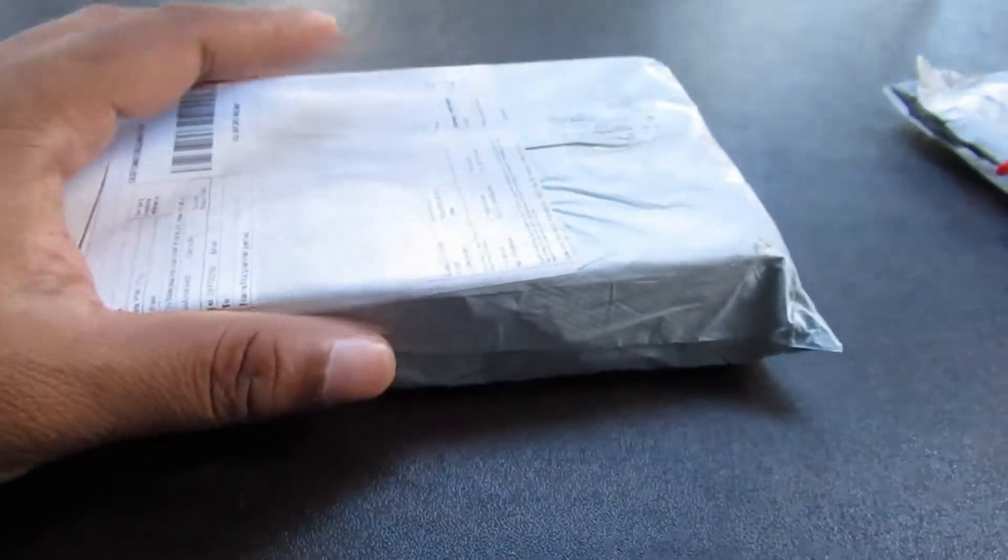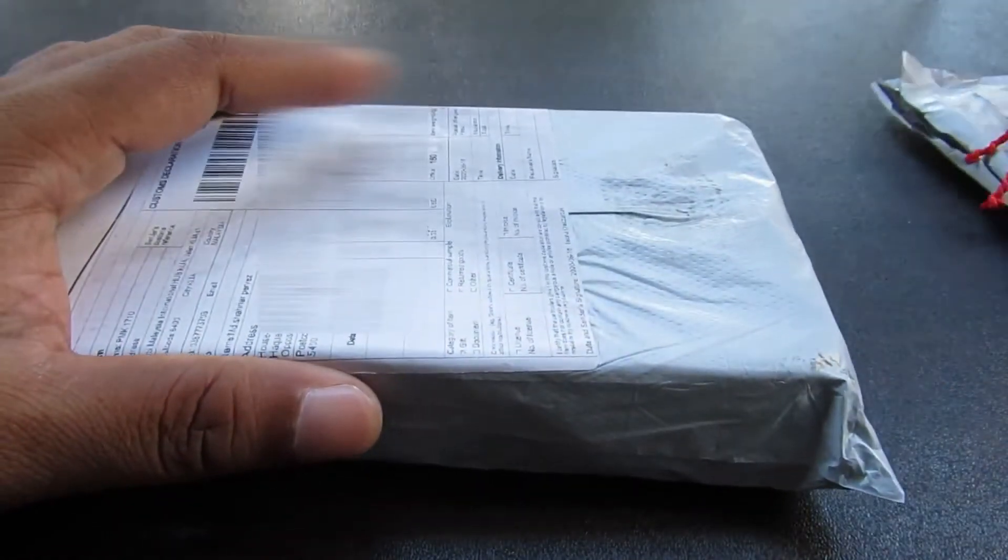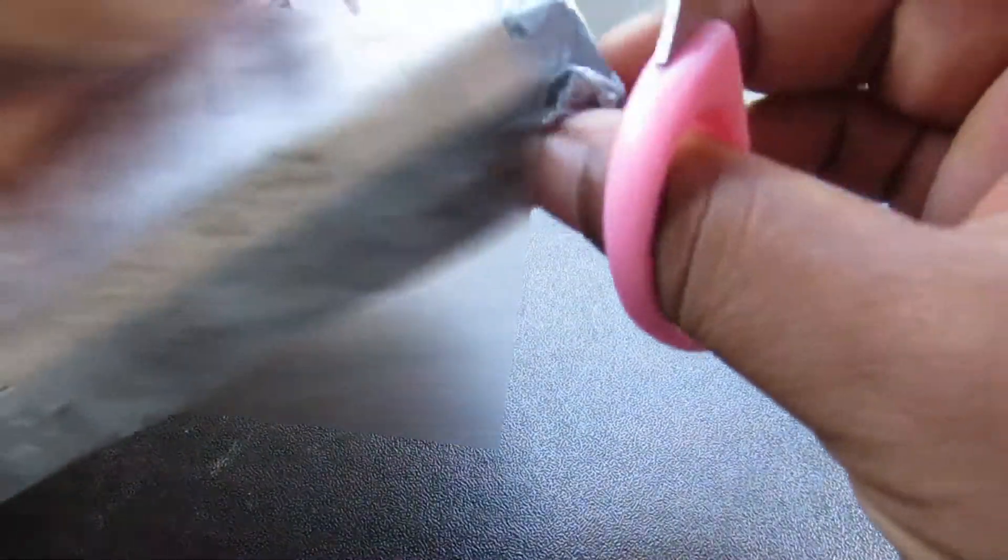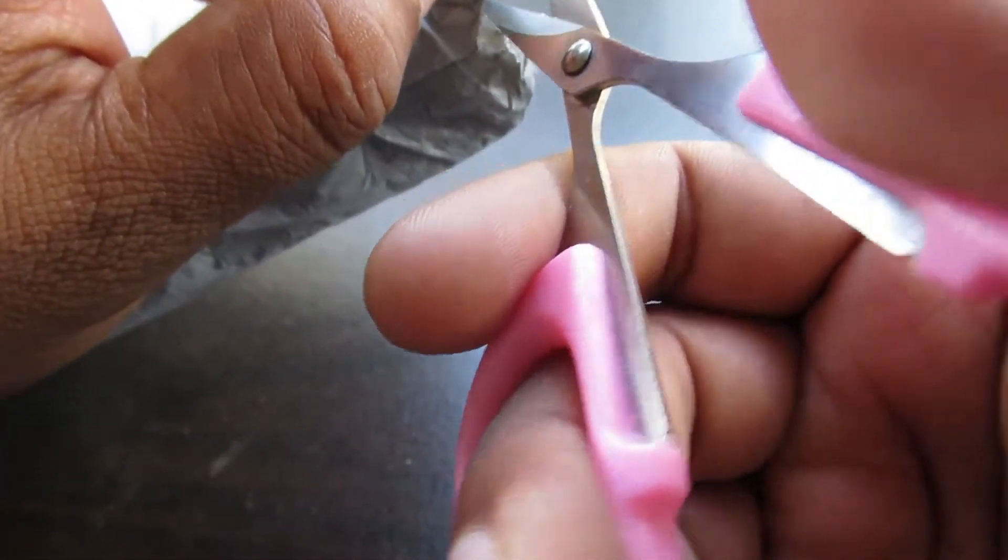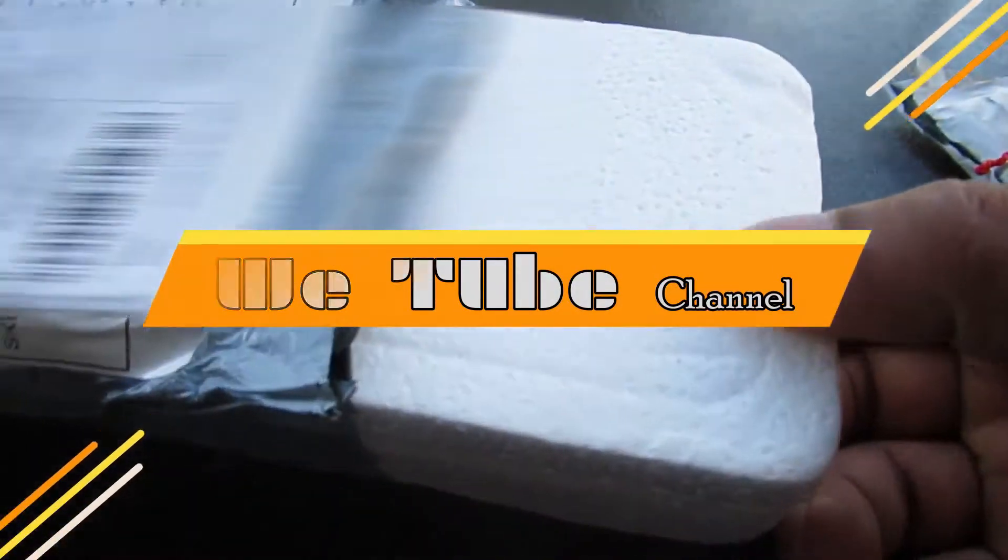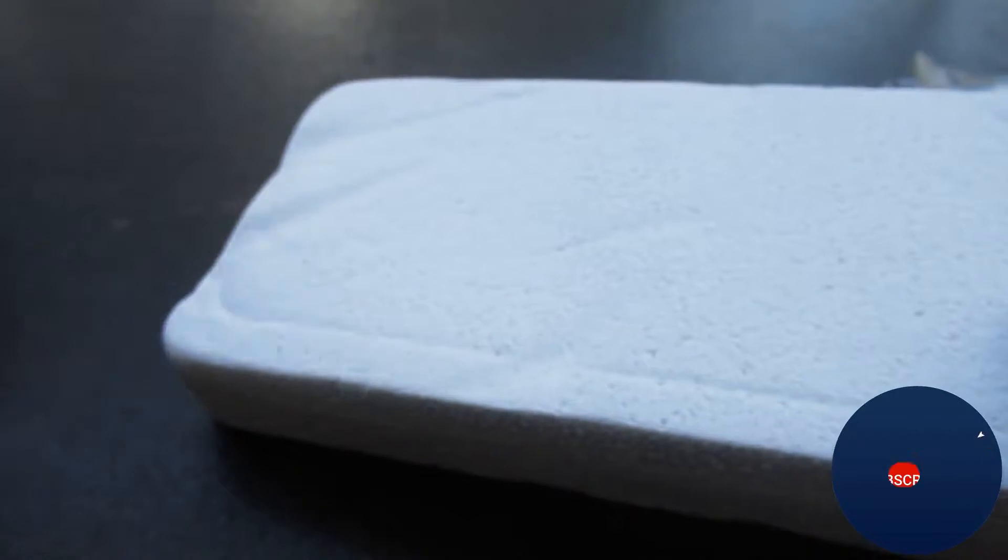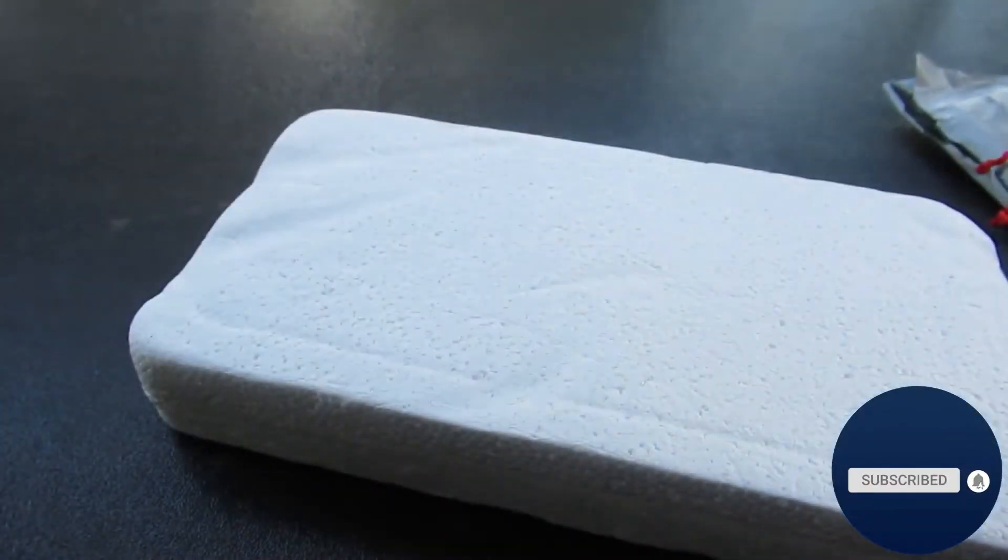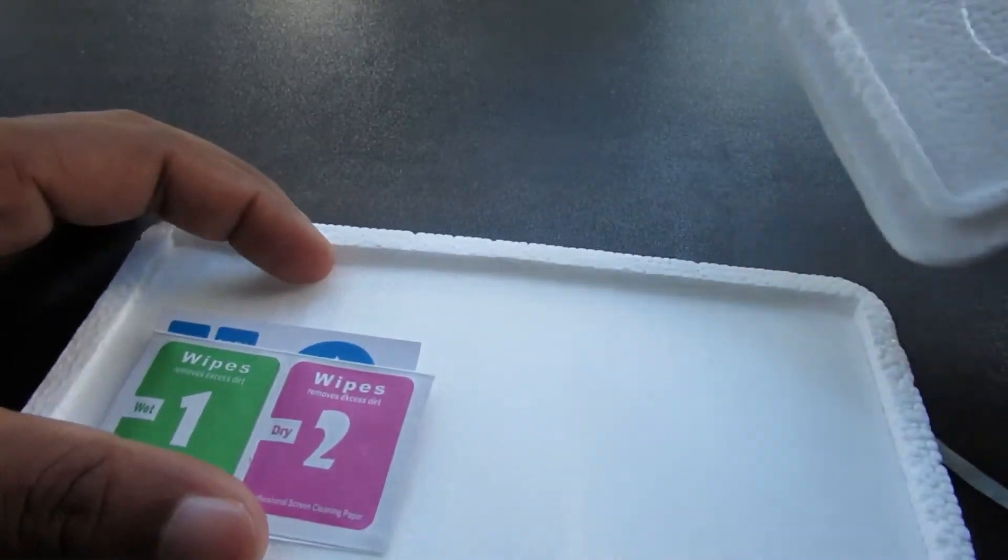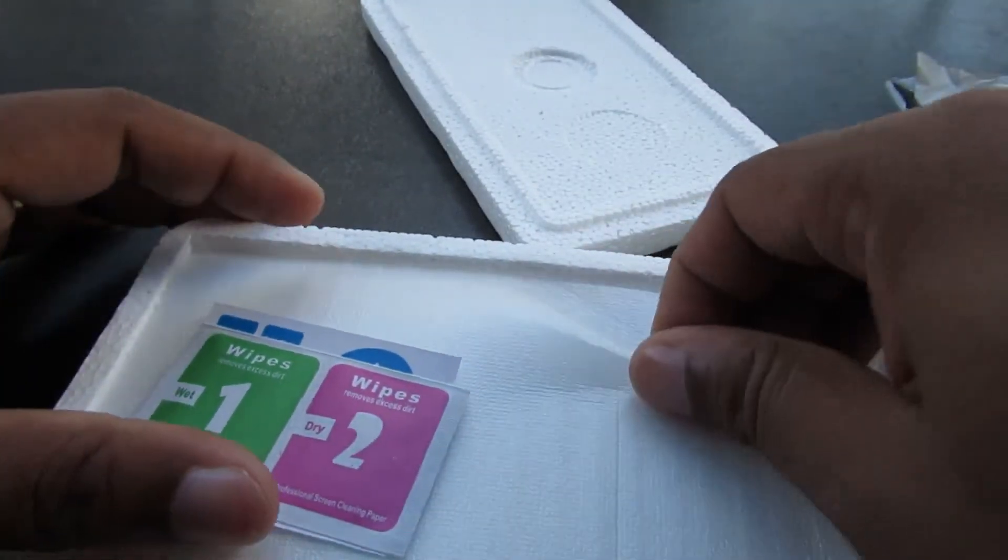Okay guys, now I'm going to open the second product, this one. This is a phone screen protector. Okay first I'm going to cut this plastic. Inside the packet nothing. And here is the skin protector, seller sent me the protector in a good way.